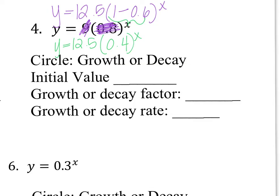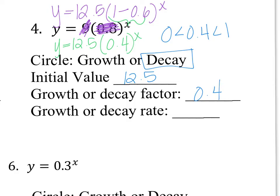I still have my 12.5 on the outside, but what is 1 minus 0.6? That actually is going to be 0.4 to the x power. Now that I have my new equation, I need to decide if it's growth or decay. 0.4 is in between 0 and 1, so it's going to be decay. My initial value is whatever is on the outside, which is 12.5. My decay factor is just the value of b, so it's going to be 0.4.